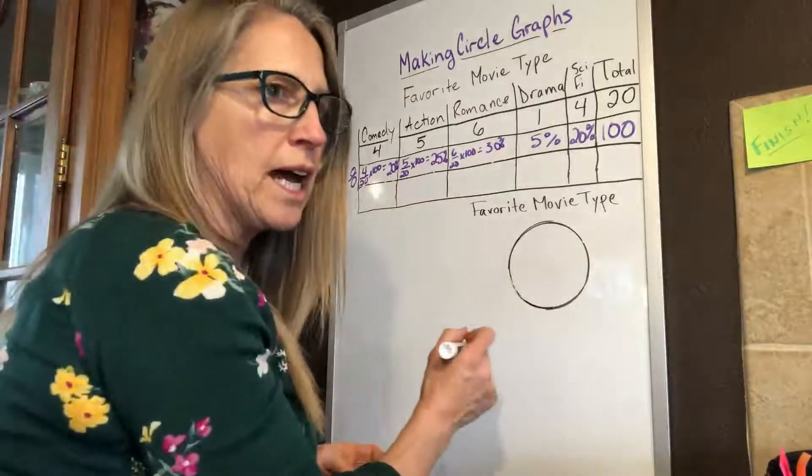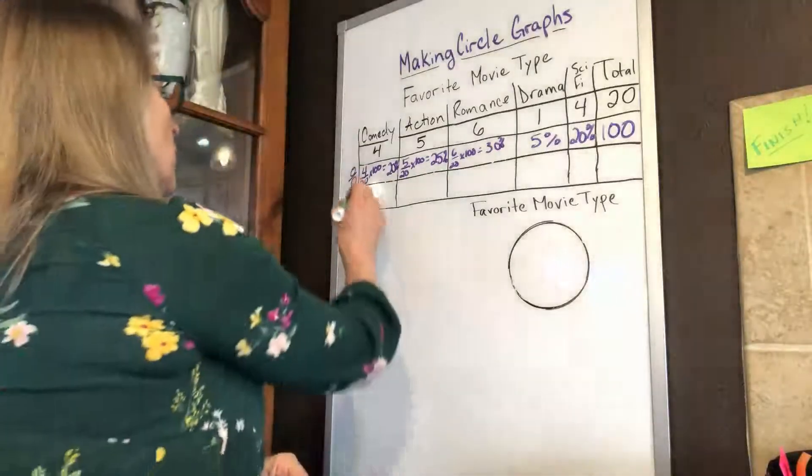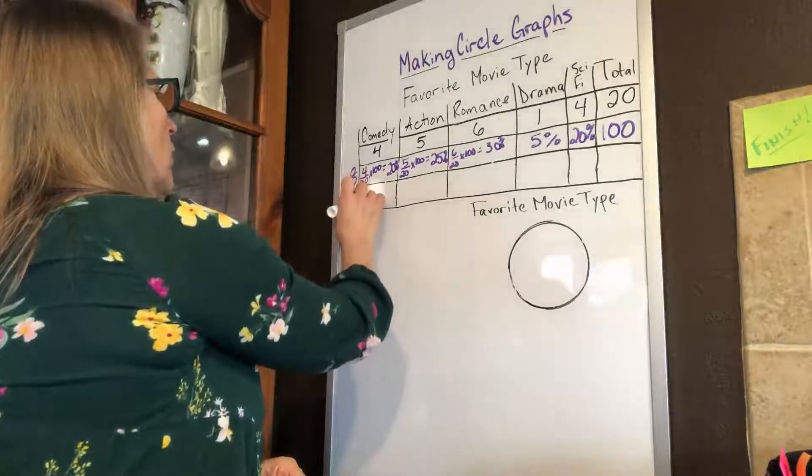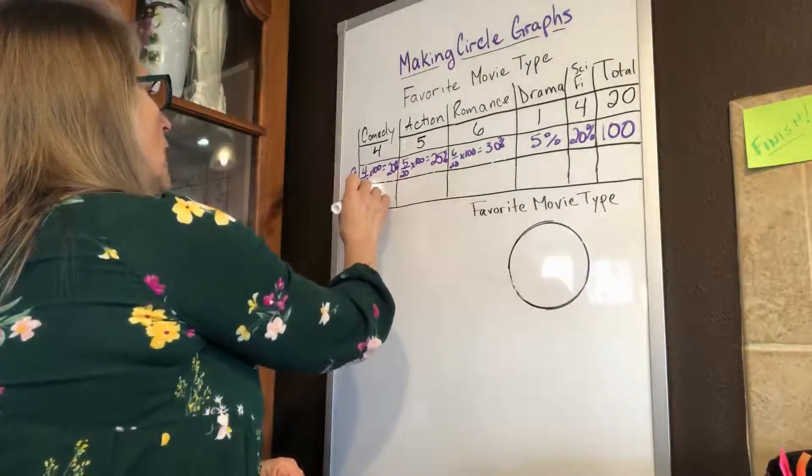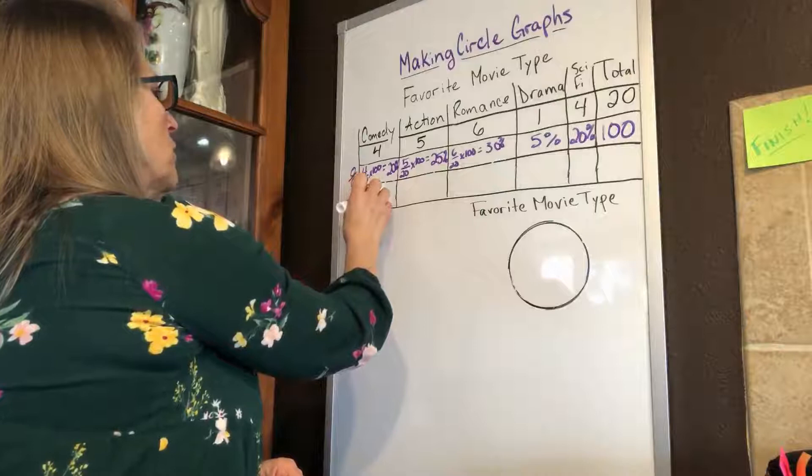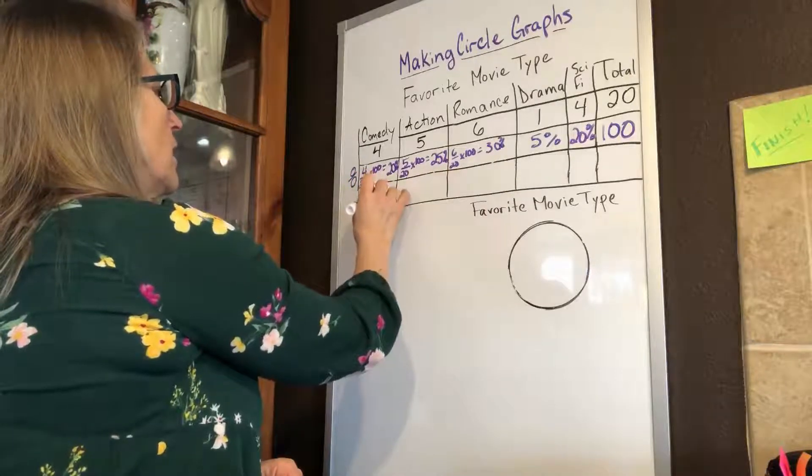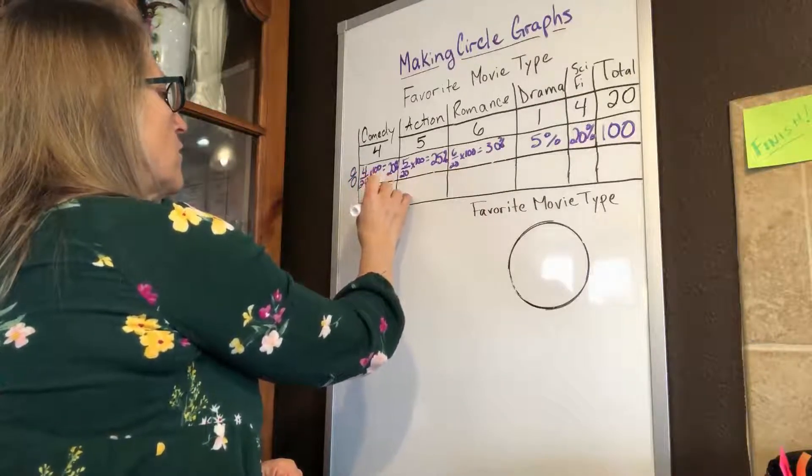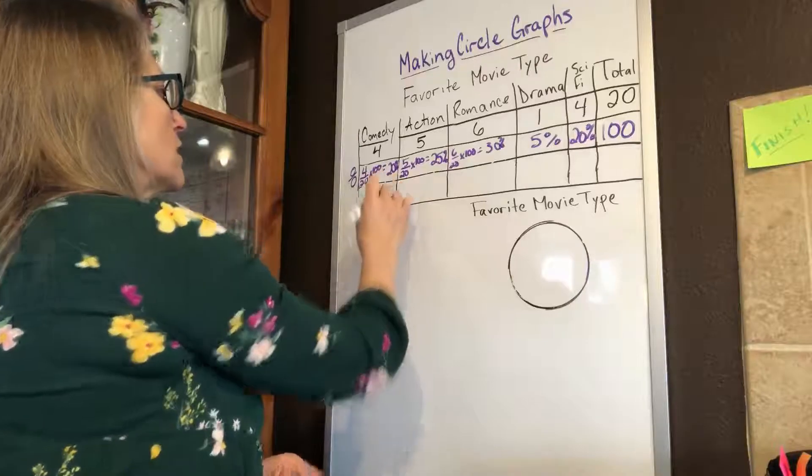So we would take this 4 divided by 20, and we would multiply it by 360. So we have our 4 divided by 20, and we would multiply it by our 360 degrees. That's going to give us 72 degrees.